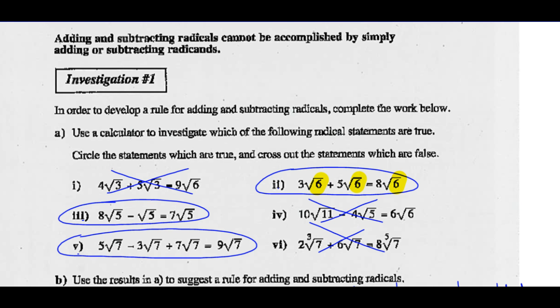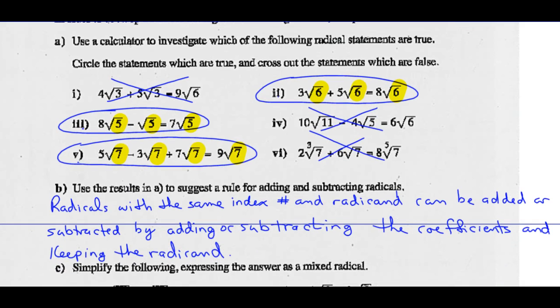They must also have the same index number — the index number in both these is square root, or 2. So in example 3, they have the same radicand of 5; we keep that radicand and simply subtract: 8 minus 1. In example 5, they've got the same radicand of 7; we keep that radicand of 7, and we add and subtract the coefficients: 5 minus 3 plus 7 gives us 9 root 7. So you should write that down: radicals with the same index number and radicand can be added or subtracted by adding or subtracting the coefficients and keeping the radicand.